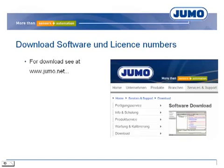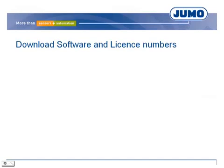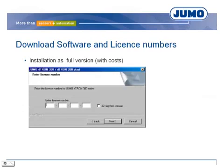The programs can be downloaded at the JUMO homepage or with the help of the installation CD. Normally the program is installed as a full version. In this case the license number has to be entered during the installation process.